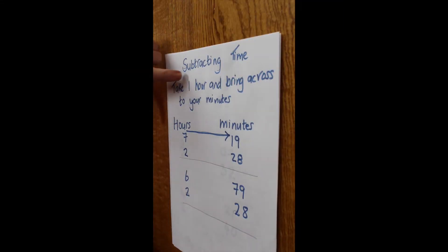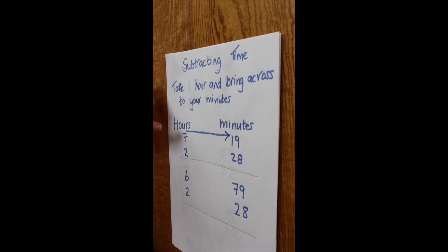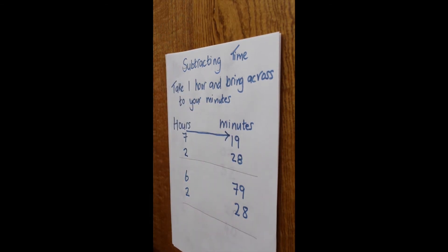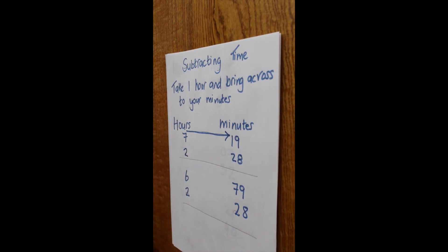The rule is we need to take one hour and bring it across to the minutes. Why would we do that? How many minutes are in an hour? 60. So we're going to take 60 minutes from the hours and bring it across, and that gives us six hours and 79 minutes. Where did I get the 79 from? The seventh hour was brought over to the minutes, which created 79.